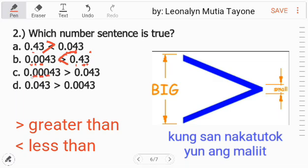Sa choice C, may tatlong zero from decimal, so mas malayo itong non-zero. Ito naman mas malapit, dapat mas malaki ito, so dapat ganyan yung arrow nya, mali pa rin. Choice letter D: mas malapit siya, ito mas malayo kasi dalawang zero pa bago yung 43, so ito ang mas malaki kaysa dito. So tama itong greater than, so 0.043 is greater than 0.0043.